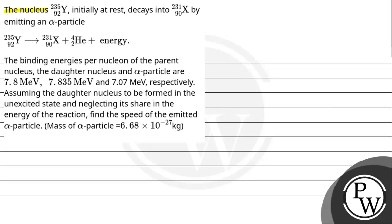Hello everyone. Let's read this question. The nucleus 235-92-Y, initially at rest, decays into 231-X-90 by emitting an alpha particle. The reaction is given here.